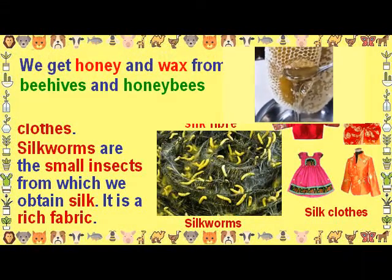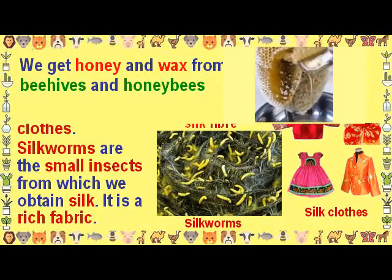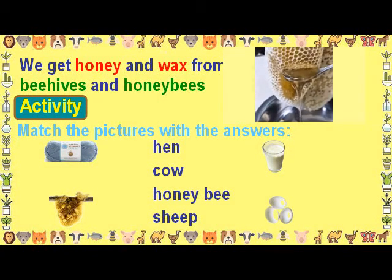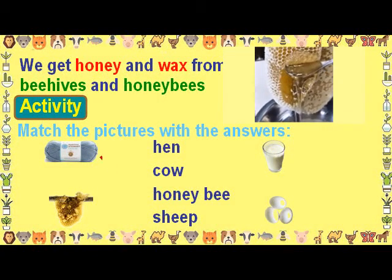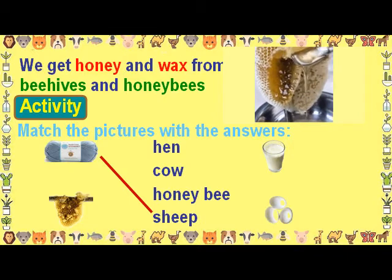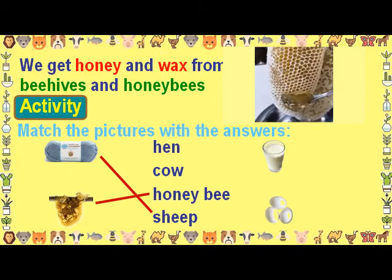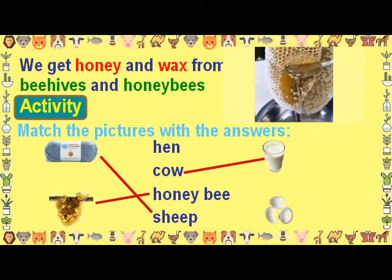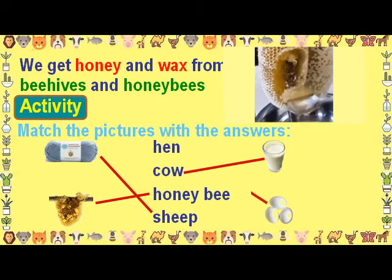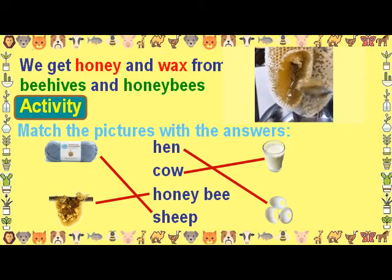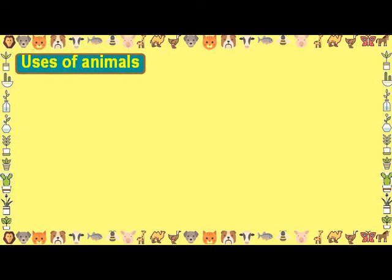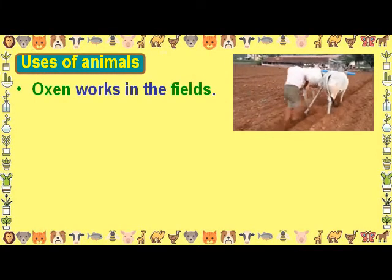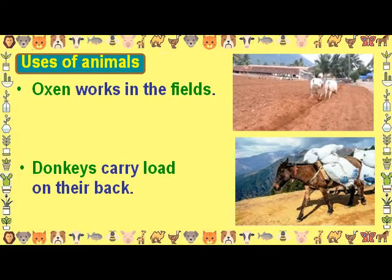We get honey and wax from beehives and honey bees. Activity — match the pictures with the answers: wool matches with sheep, honeycomb matches with honey bee, milk matches with cow, and eggs match with hen.